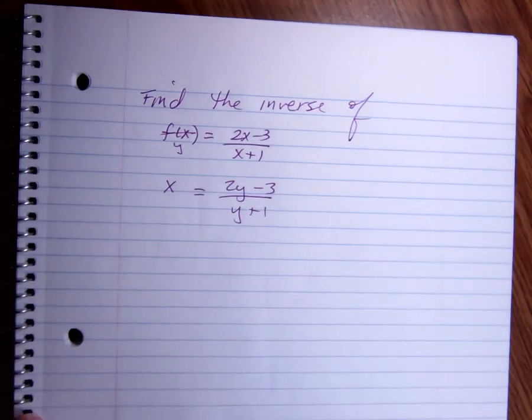My goal is to get these two copies of y together and by themselves so that I end up with y equals everything else on the other side. When I do that, I will have the inverse.